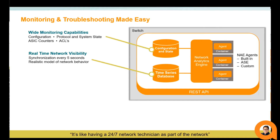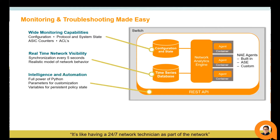The Network Analytics Engine is built upon the REST API, giving the capability to utilize Python or make REST calls with the help of the built-in Swagger interface. This powerful tool has low system overhead due to its isolation in its own sandbox environment. There's a maximum amount of CPU allocated to the NAE, and if there were ever an issue, it would not affect the system as a whole.